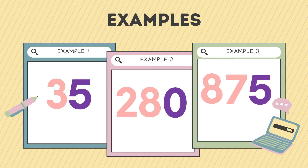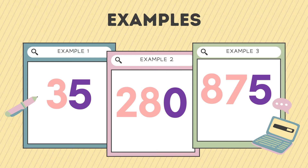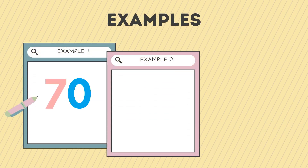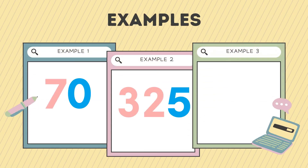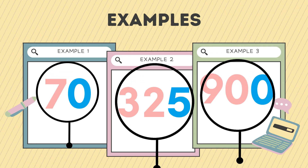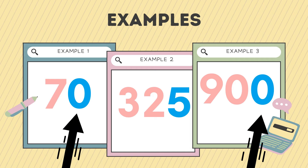If a number ends with zero or five, it is divisible by five. Therefore, 35, 280, and 875 are divisible by five. Another set of examples: 70, 325, and 900 are all divisible by five because they end with zero or five.